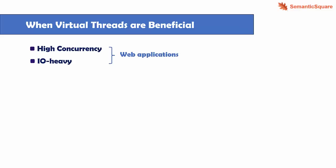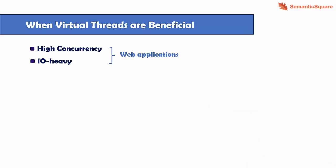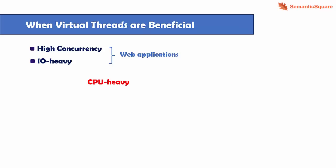A typical scenario where virtual threads are beneficial is web applications, because they receive lots of concurrent requests and many of those requests involve blocking operations — like accessing a remote API, a microservice, or downloading a web page. However, virtual threads are not helpful for applications that are not I/O heavy, meaning there are not many blocking operations. In that case, OS threads wouldn't be blocked anyway — these are CPU-intensive applications needing CPU resources. For example, matrix multiplication involves constant computations with no blocking operations, so virtual threads may not provide much benefit over a fixed thread pool.